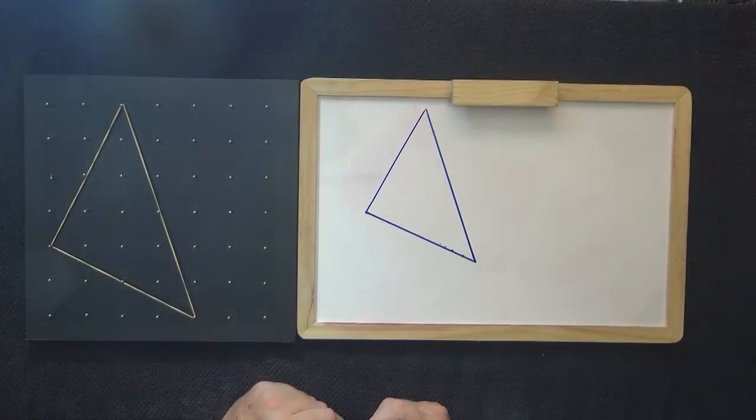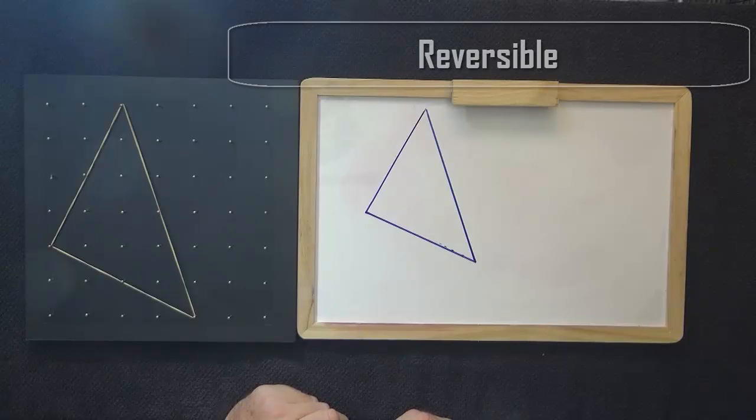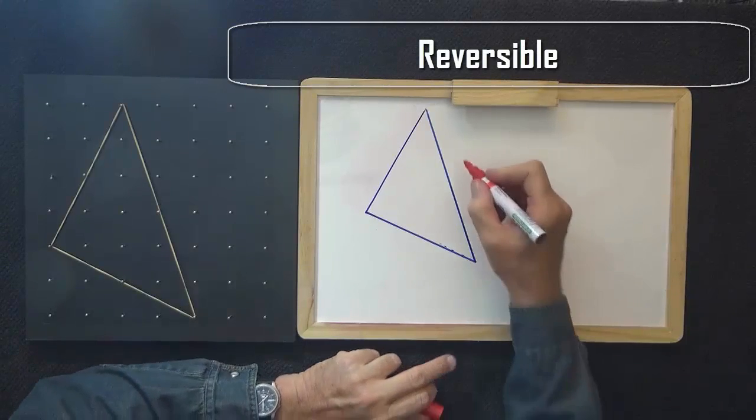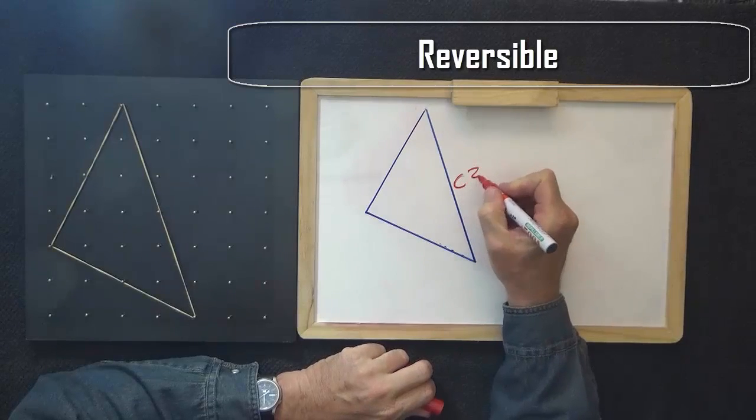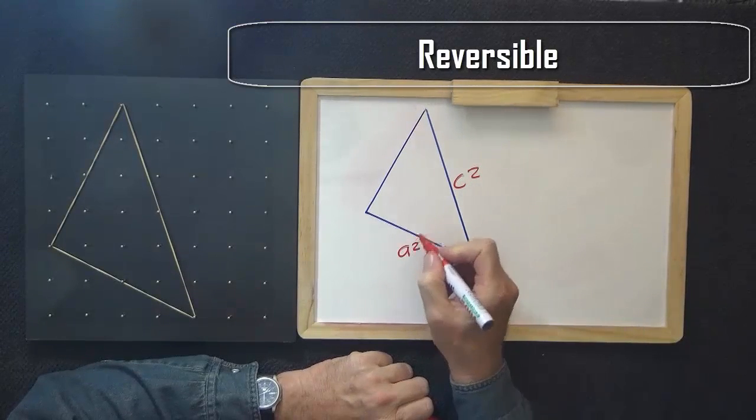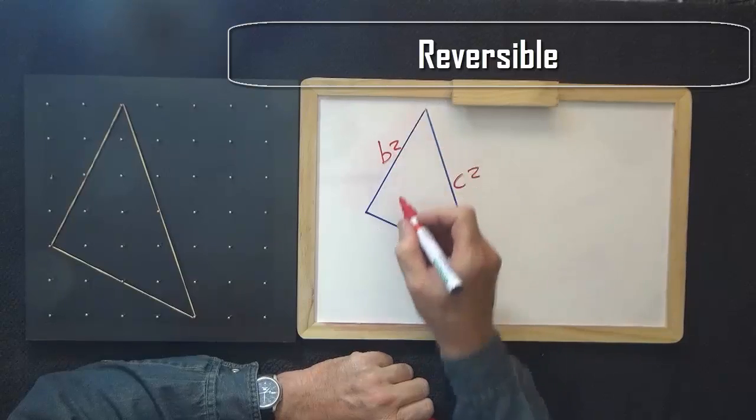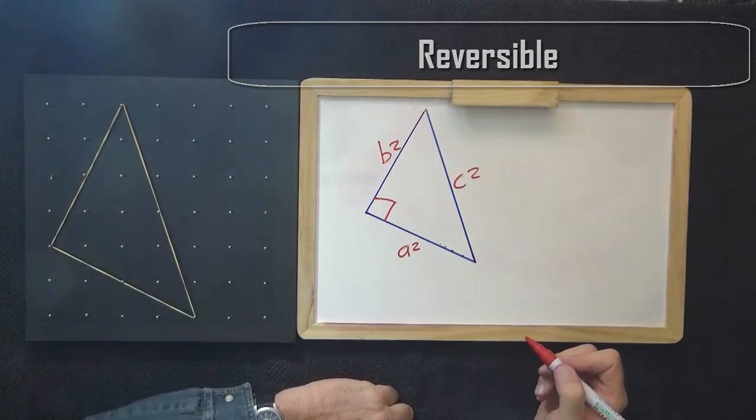Another interesting thing about the Pythagorean theorem is that it is reversible. So in other words, if c² = a² + b², then that's a right-angled triangle.